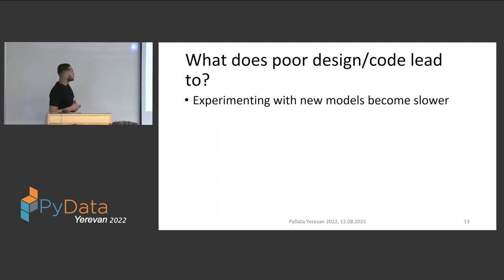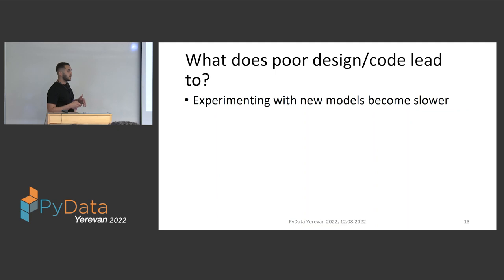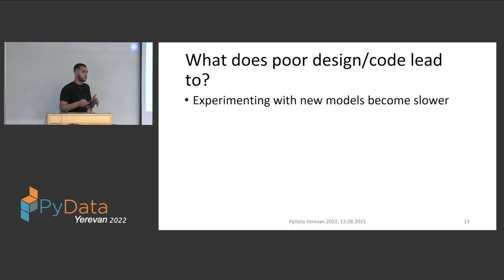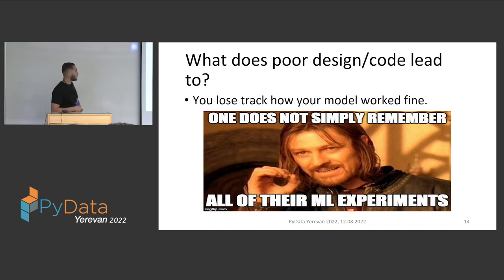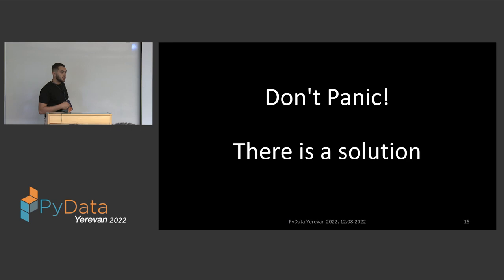As an ML engineer, you need to do tons of experiments. When you have poor design and poor code, experimenting with new models can become slower — you may need to spend days or hours to change something in your codebase to experiment with new models. Also, you can't track how your model performs; you can't simply remember all model performance results. This is an issue not just of poor code but of poor principles in your projects.